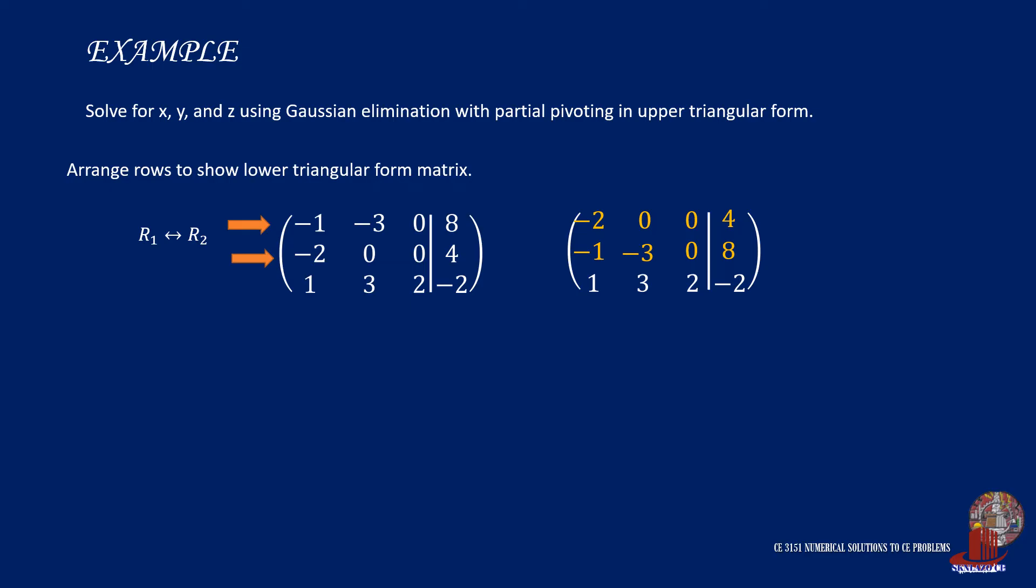So by checking on the outcome, all non-zero elements appear below the main diagonal. And hence, we attained a lower triangular form of the matrix.